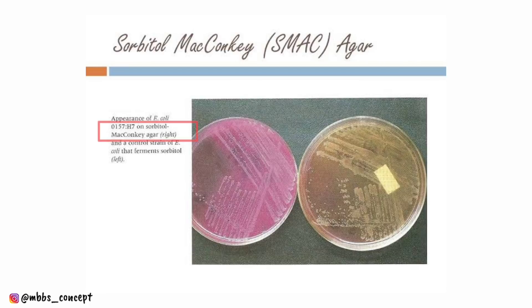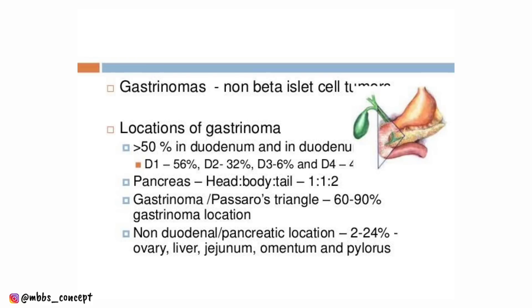Another question asked about the selective media for E. coli O157:H7 — the answer was sorbitol MacConkey agar. The next question asked about the most common site for gastrinoma under MEN1 syndrome.